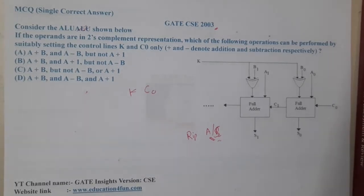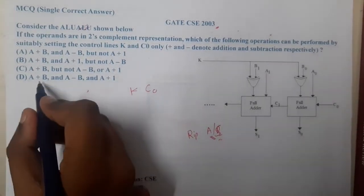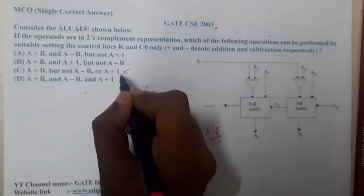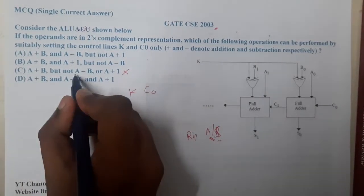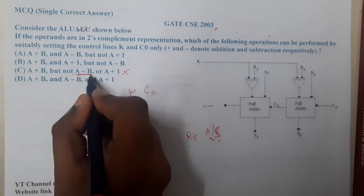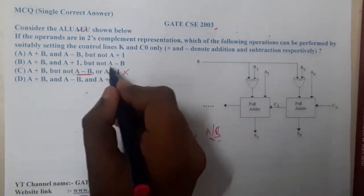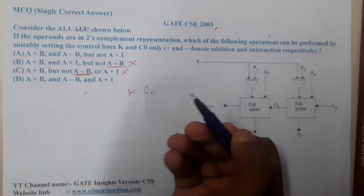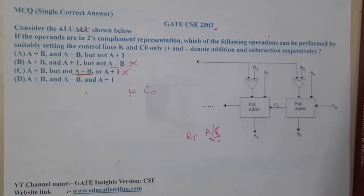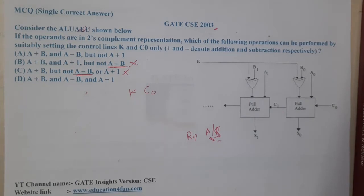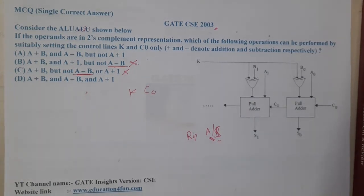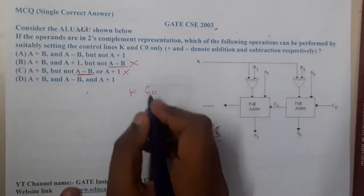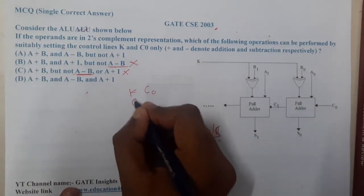With that simple understanding, I am sure most of you have removed this option that is saying a minus b cannot be performed, so that is wrong. Similarly, this option also, I think most of you have removed—that is also saying a minus b cannot be performed. Anyway, if you are having a doubt about how exactly a minus b can be performed, let me show you.